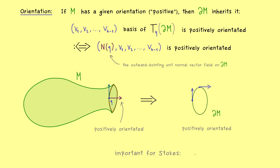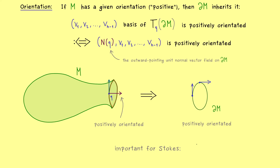This will be really important for the formula in Stokes' theorem, because there we will compare two integrations — the integration over the boundary and over M are connected in some way. Obviously if the orientation wasn't fixed, we would have a problem with the sign on one side. Therefore it is really important to remember how we transform the orientation from the manifold to its boundary. Then let's continue our discussion in the direction of Stokes' theorem with the next videos. I really hope to meet you there again, and have a nice day. Bye bye.